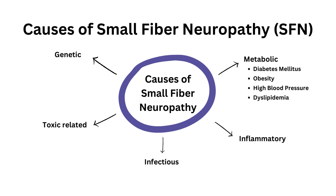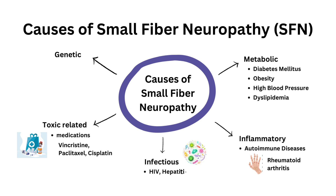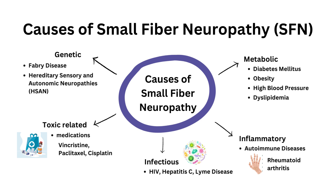Inflammatory causes include autoimmune diseases like rheumatoid arthritis. Toxic-related causes including medications include vincristine, paclitaxel, and cisplatin. Infectious causes include HIV, hepatitis C, Lyme disease, etc. Genetic causes include Fabry disease, hereditary sensory and autonomic neuropathies, and mutations in SCN9A and SCN10A genes, which affect sodium channels involved in nerve signal transmission.